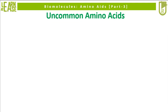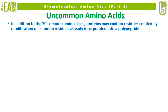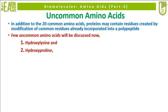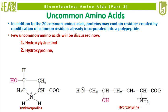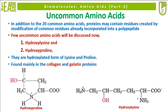Now I will portray some uncommon amino acids. In addition to the 20 common amino acids, proteins may contain residues created by modification of common residues already incorporated into a polypeptide. The first two uncommon amino acids are hydroxylysine and hydroxyproline. They are derived from lysine and proline respectively by hydroxylation, and are mainly found in the collagen and gelatin proteins.